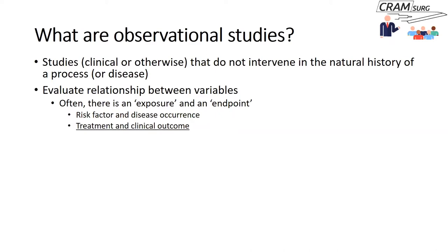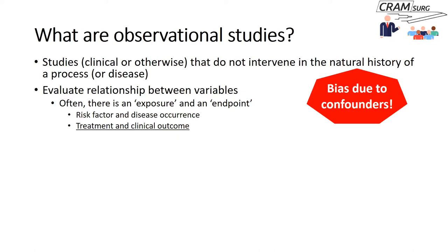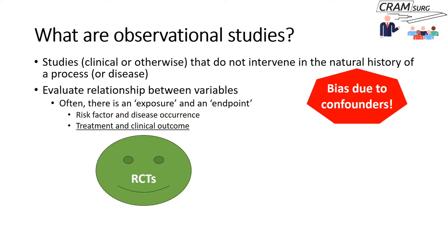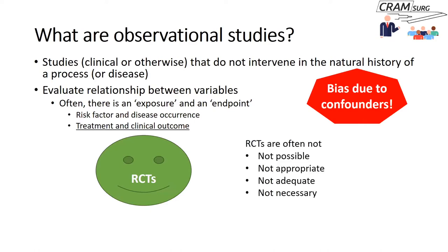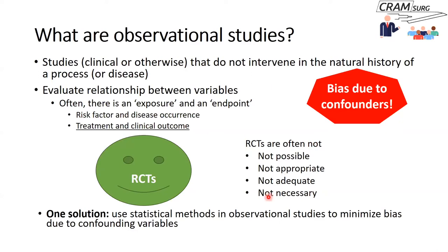We'll focus on an example involving a treatment and a clinical outcome. The big problem with observational studies is bias, and the bias we're talking about today is bias due to confounding variables — variables that impact on both the exposure and the endpoint. The ideal solution is to do a randomized control trial, but RCTs are sometimes not possible, not appropriate, sometimes inadequate, and sometimes not necessary. So one solution is to use statistical methods in observational studies to minimize bias due to confounders.